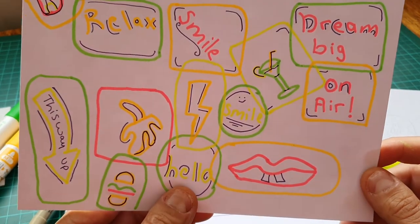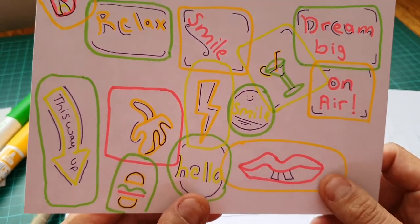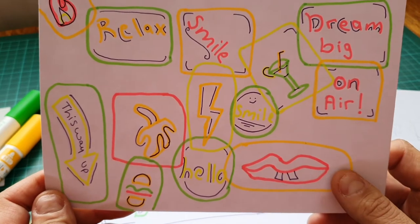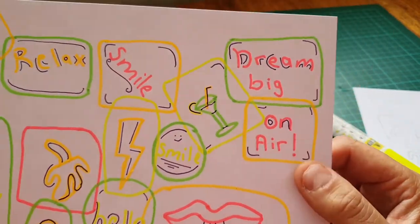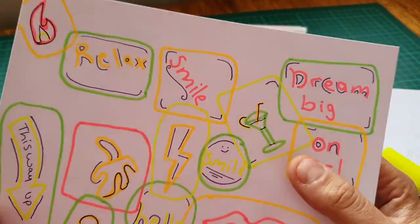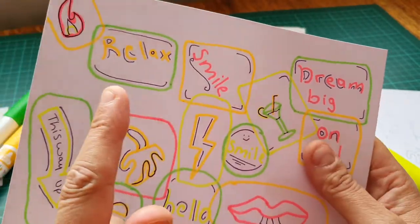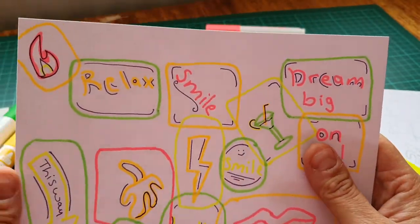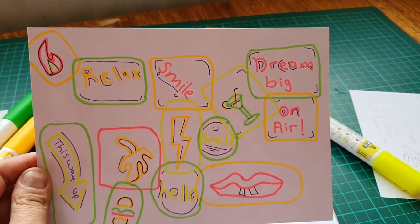And what's that supposed to be? Oh, hello, and a pair of lips with goofy buck teeth. Dream big, and that's a cocktail glass. Smile - I've done that twice. So that's where I came up with this.